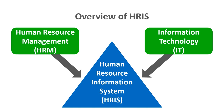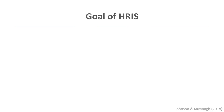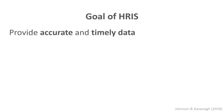When thinking about what a human resource information system is, we can think about the confluence or integration of two different areas: human resource management on one hand, and information technology on the other. At the center of this are the data that reside in the system. The primary goal of an HRIS is to provide accurate and timely data — when we have both, we typically think of the data as being high quality.